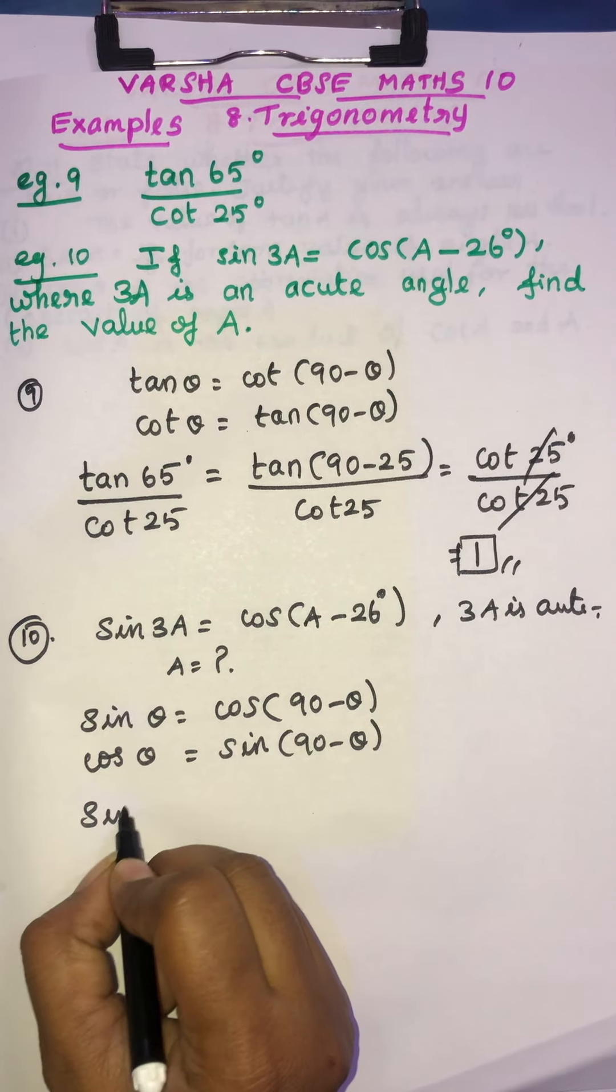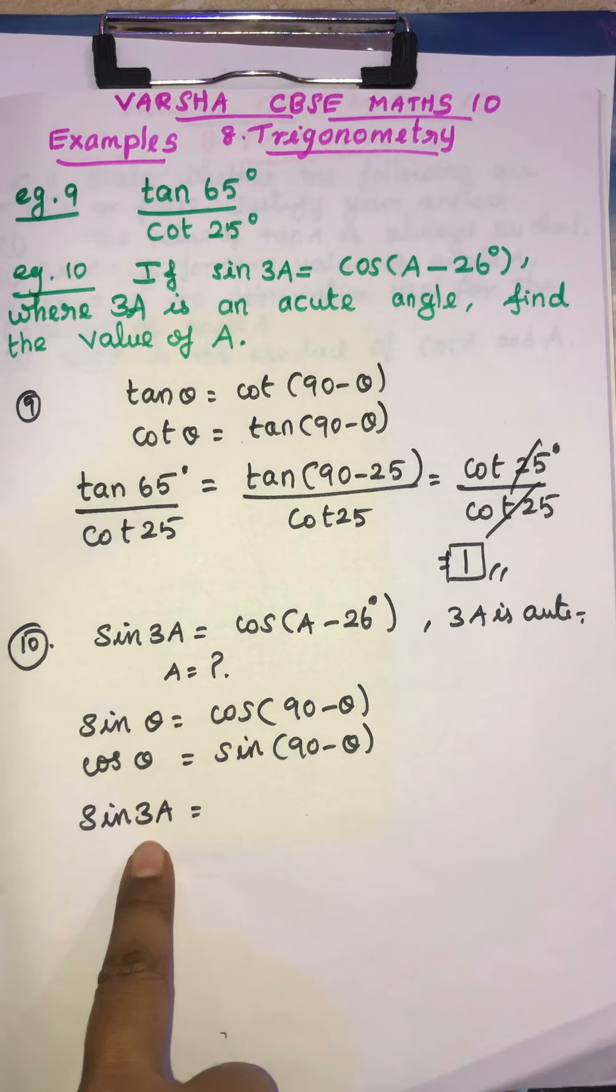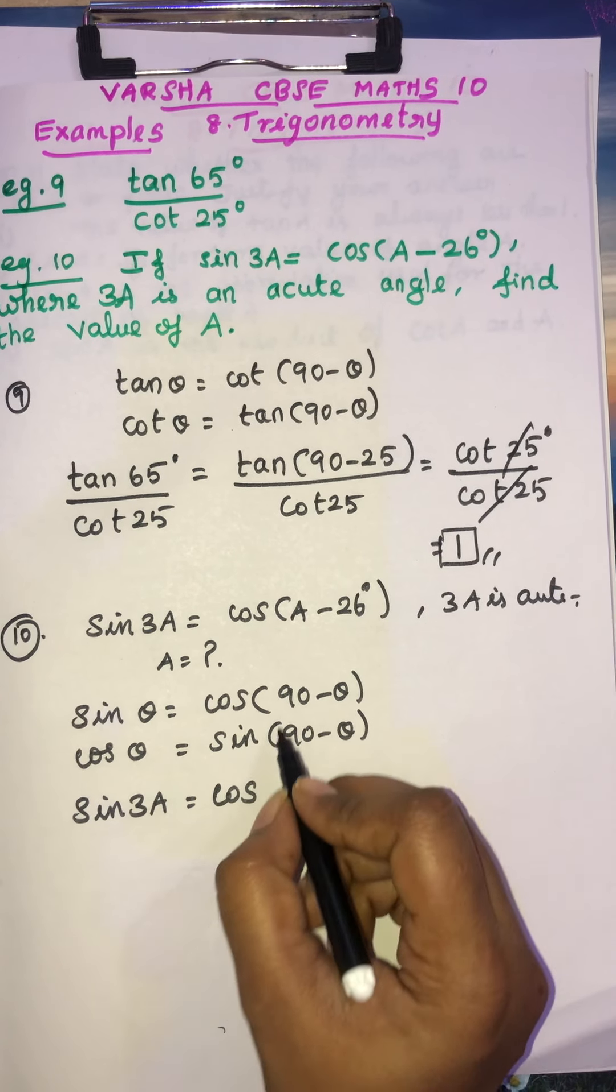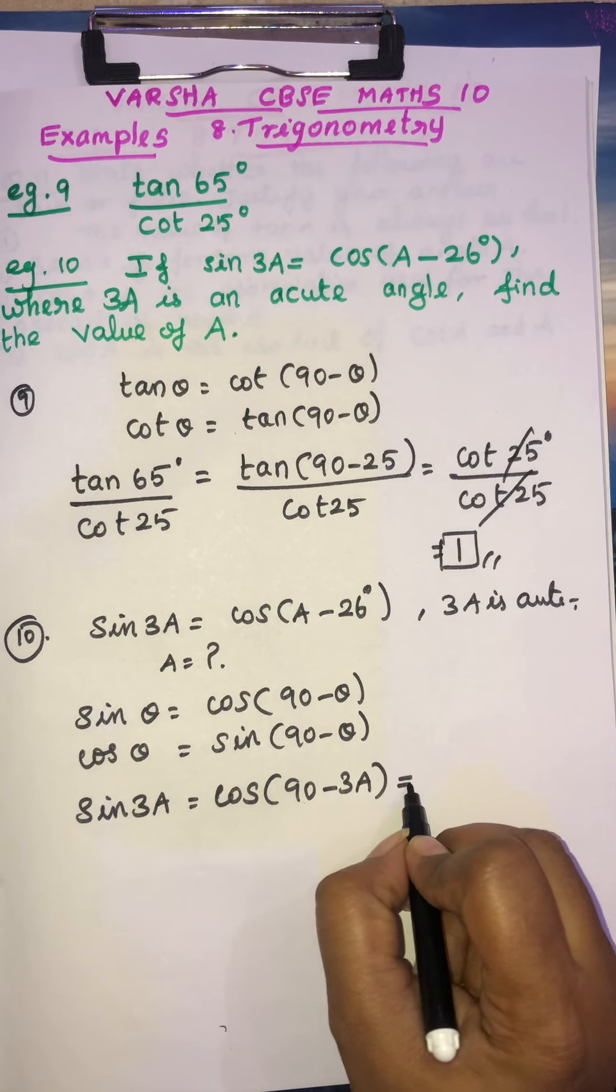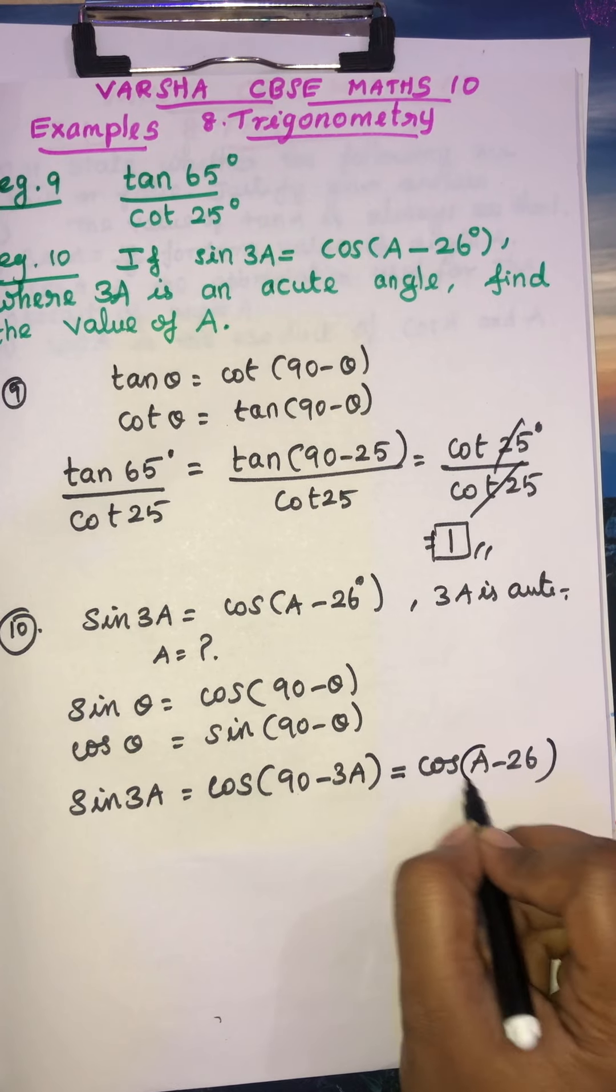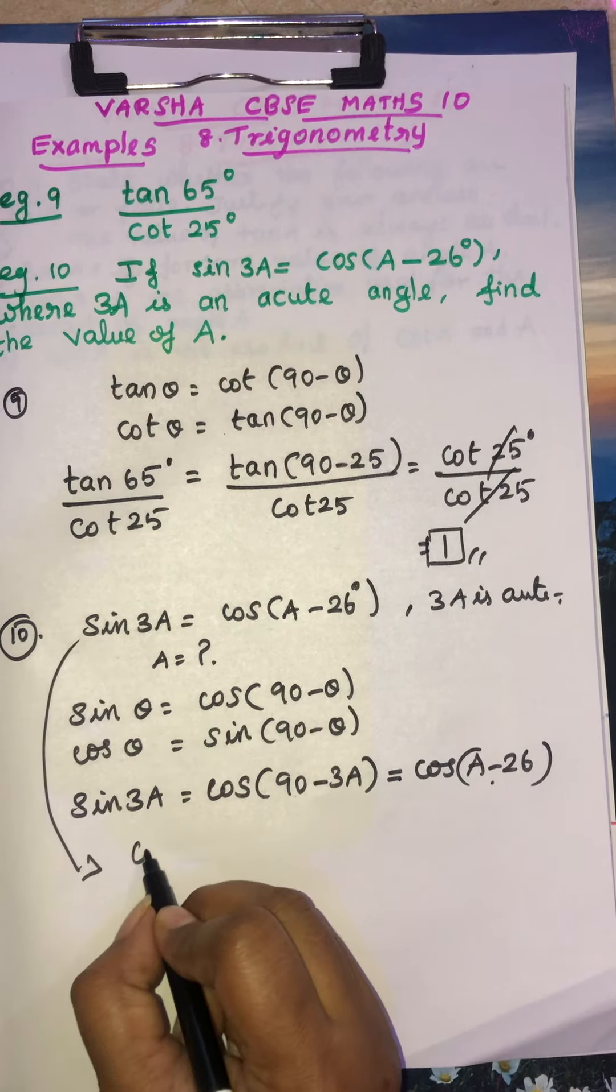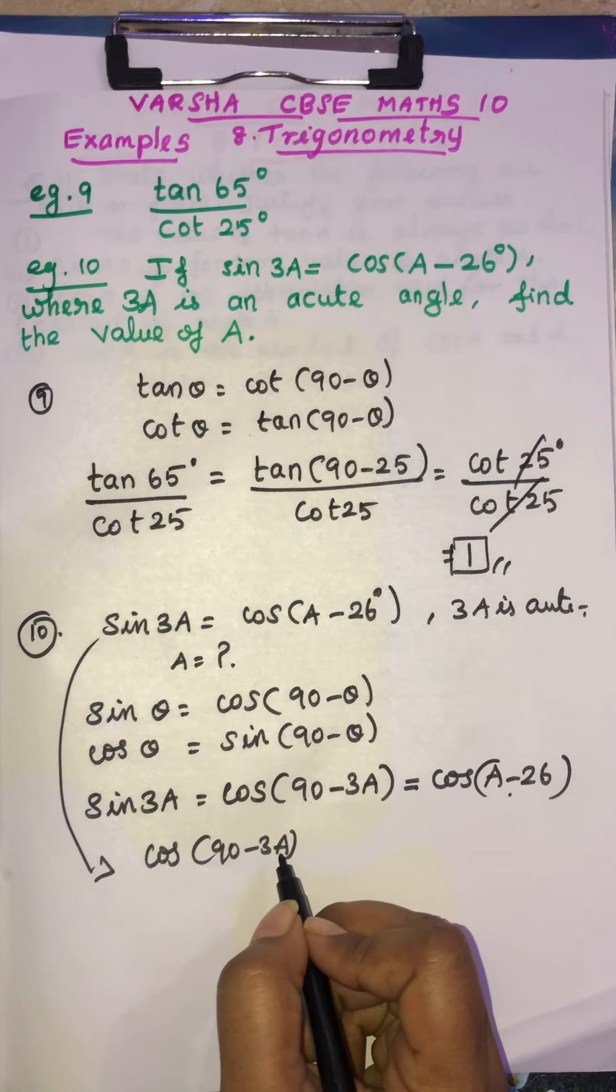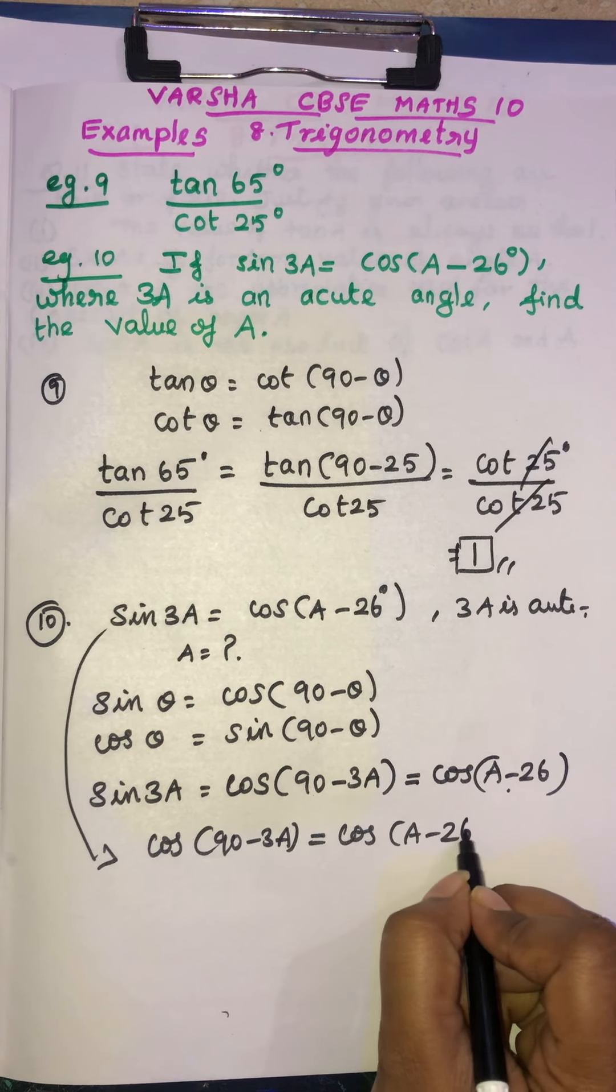So this is sin 3a. So theta, the place is 3a is there. So it can be written like cos 90 minus 3a is equal to cos a minus 26. In the question, for sin 3a you can write cos 90 minus 3a. Equal to cos a minus 26.